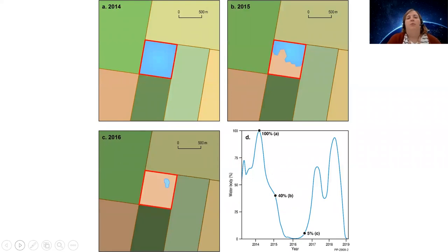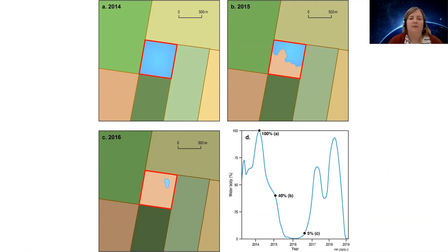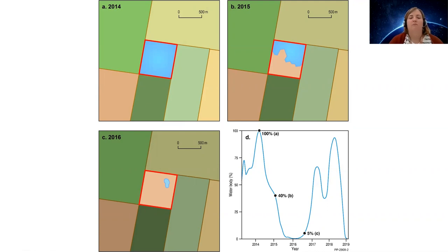For every single one of those water bodies, we looked at the individual satellite observations and tracked how the surface area of water inside each object has changed over time. As an example, in our reference lake at time step A, we can see it's completely covered in water. At time B it's about 40% coverage, and at time C only 5%. Taking all 300,000 water bodies and doing this for every satellite observation gives a really rich time history of how each individual water body has changed.